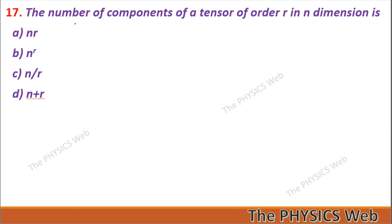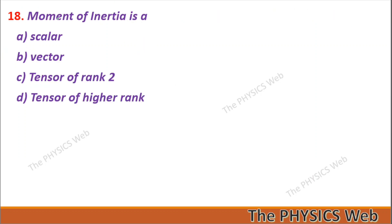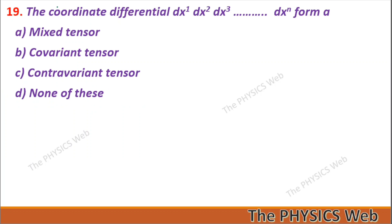Question 17: The number of components of a tensor of order r in n dimensions is n to the power r — so B is your correct option. Question 18: The moment of inertia is a tensor of rank two — so C is your correct option. Question 19: The coordinate differentials form a contravariant tensor — so C is your correct option.